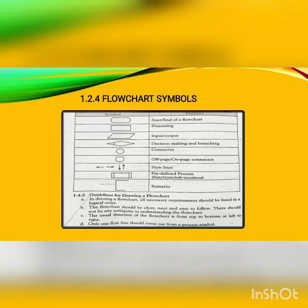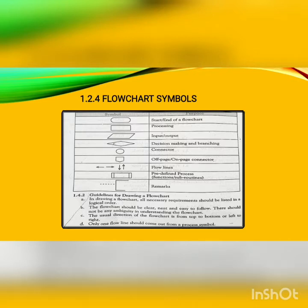A parallelogram represents the input and output of a program. For making decisions and branching, a diamond symbol is used. A circle represents connectors, and there are also symbols for off-page and on-page connectors. Arrows represent flow lines. There is a symbol that defines processes used in functions and subroutines, and the last one is used to enter remarks or comments.